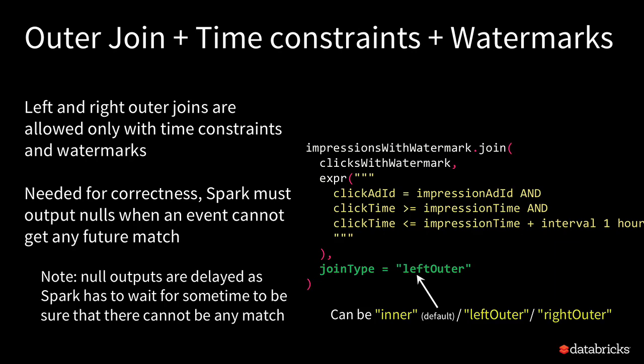Unlike the inner join where time constraints are optional for state cleanup, in the outer join those time constraints are mandatory. Otherwise the engine will not know when to give up trying to match an impression with a click and cannot generate the outer results at all. The side effect is that you will get outer results in a delayed fashion — for every impression, it needs to wait the full timeout period. So if your time constraint says a click may be at most four hours late, your outer results would be four hours delayed compared to inner results. That's a gotcha to remember about using outer joins.